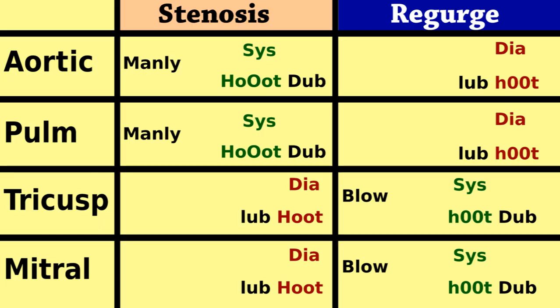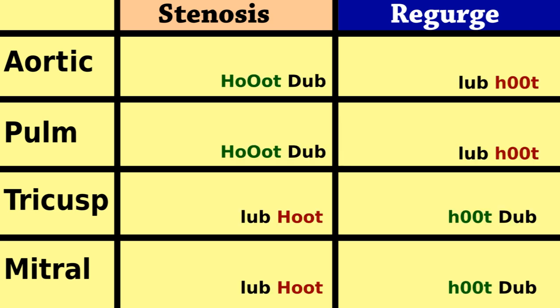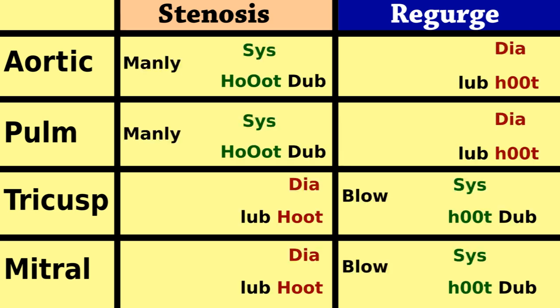If you can draw this table, you can start identifying textbook examples of eight heart murmurs via headphones.